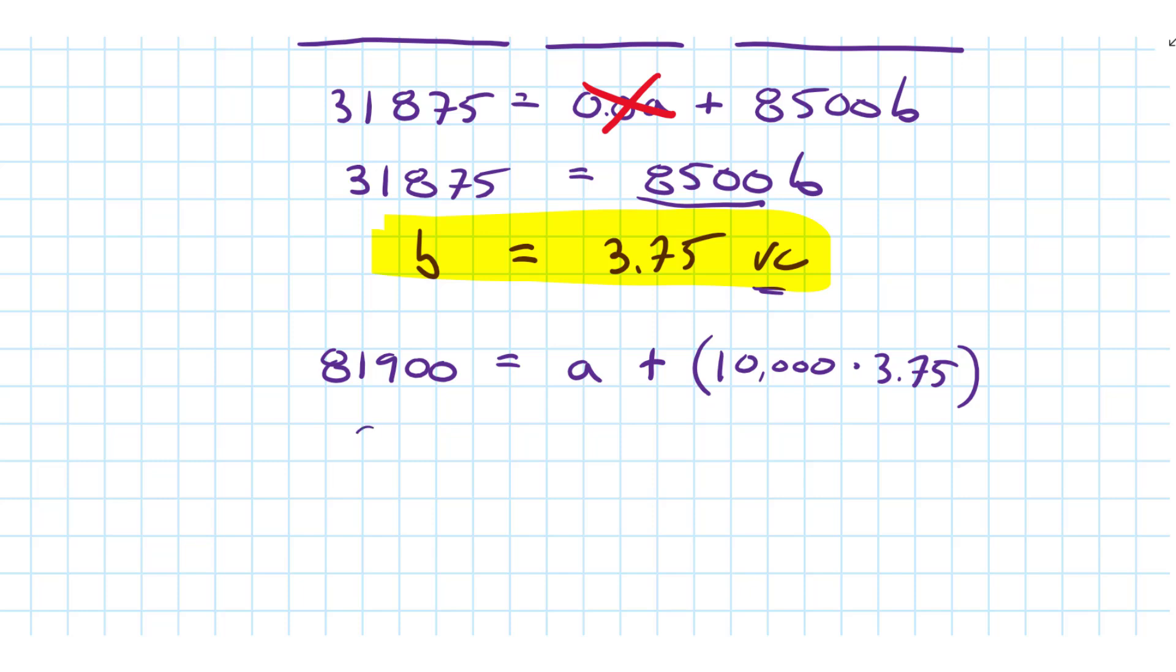So now we can say that 81,900 equals a plus 37,500. We can subtract one from the other. We can park the a on the left now and we can say a equals 44,400.